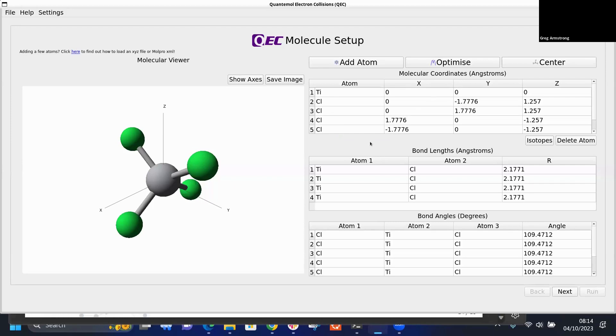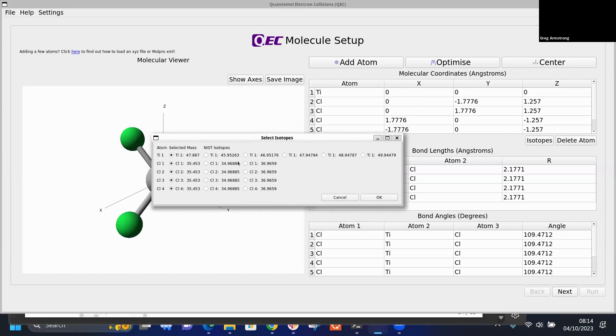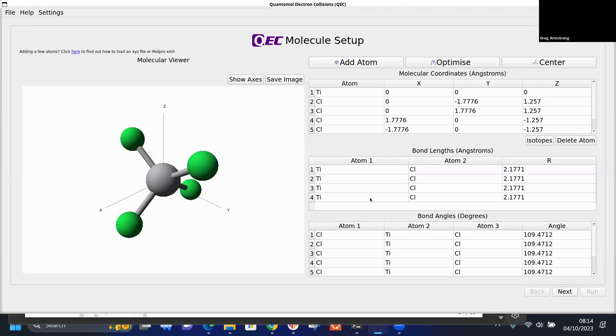For this example I want to use isotopes. There's an isotope button here. This will bring up a dialog box which allows you to select the isotope of your choice. For chlorine, 37 is reasonable abundance so I'm going to take chlorine for a couple of them and change it from 35 to 37. Then I'm going to center it - it assumes that the origin is the center of mass so I need to recenter and then continue.